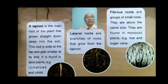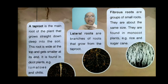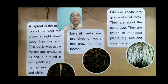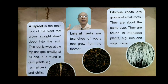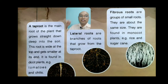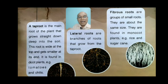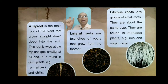Lateral roots are branches of roots that grow from the main root. Then we have the tap root — the tap root is the main root of the plant that grows straight down deep into the soil. This root is wide at the top and gets smaller at its end. It is found in dicot plants, for example tomatoes and chilies.